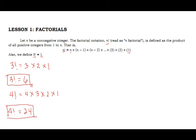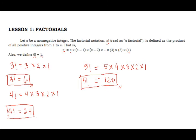If you're good at mental calculations that's better, or you can use a calculator. For 5 factorial: 5 times 4 times 3 times 2 times 1. So 5 times 4 is 20, times 3 is 60, times 2 is 120, times 1 is 120. Therefore, 5 factorial equals 120.